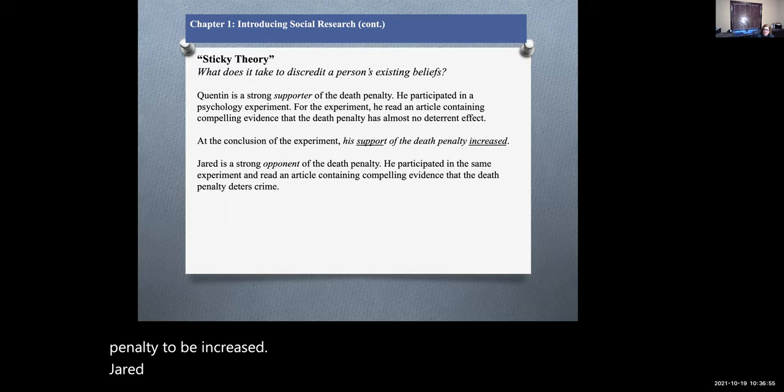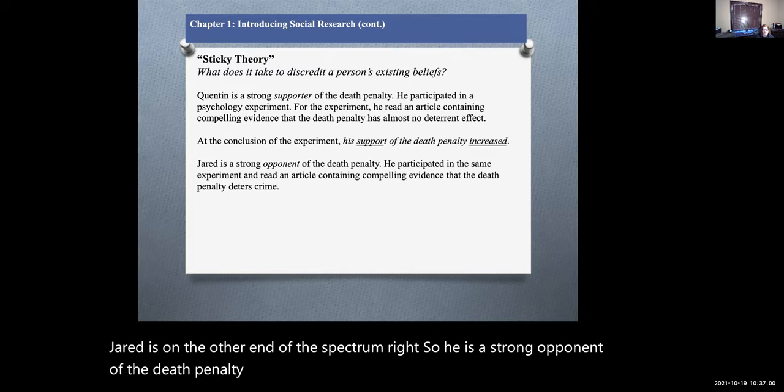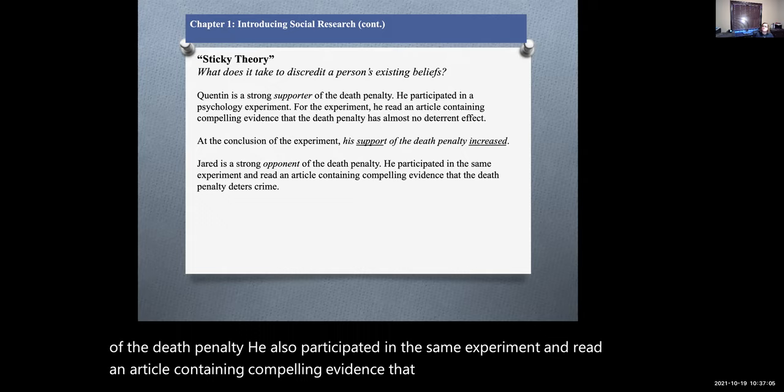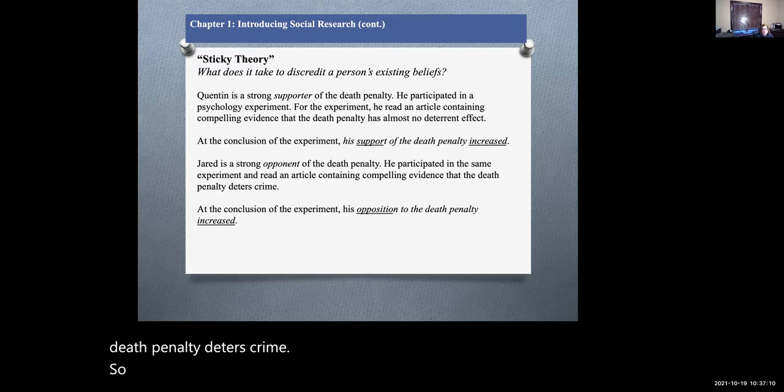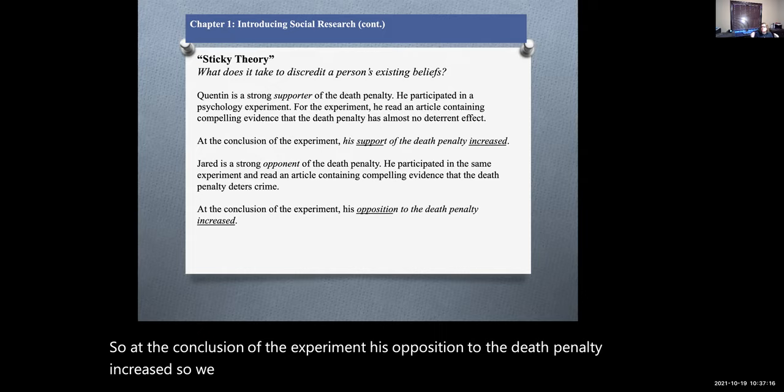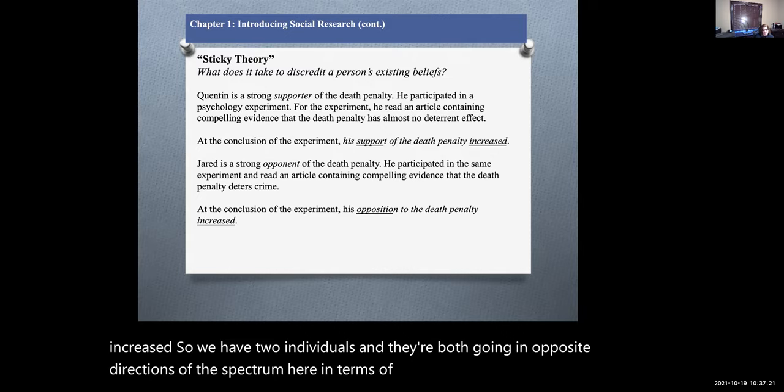Now Jared is on the other end of the spectrum, right? So he is a strong opponent of the death penalty. He also participated in the same experiment and read an article containing compelling evidence that the death penalty deters crime. At the conclusion of the experiment, his opposition to the death penalty increased. So we have two individuals and they're both going in the opposite directions of the spectrum in terms of their views on the death penalty.